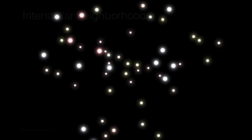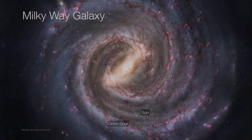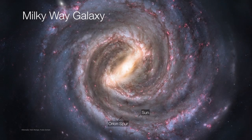The interstellar neighborhood, and indeed every star that we see, is really just concentrated into a kind of backwater region of the galaxy called the Orion Spur. It's not even a full spiral arm — we're just living off the galactic mainline somewhere. This is, of course, the Milky Way galaxy.